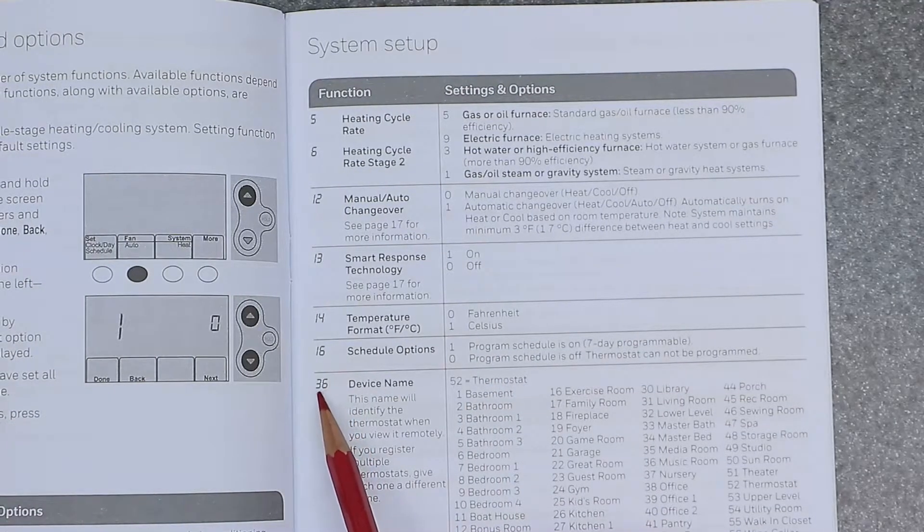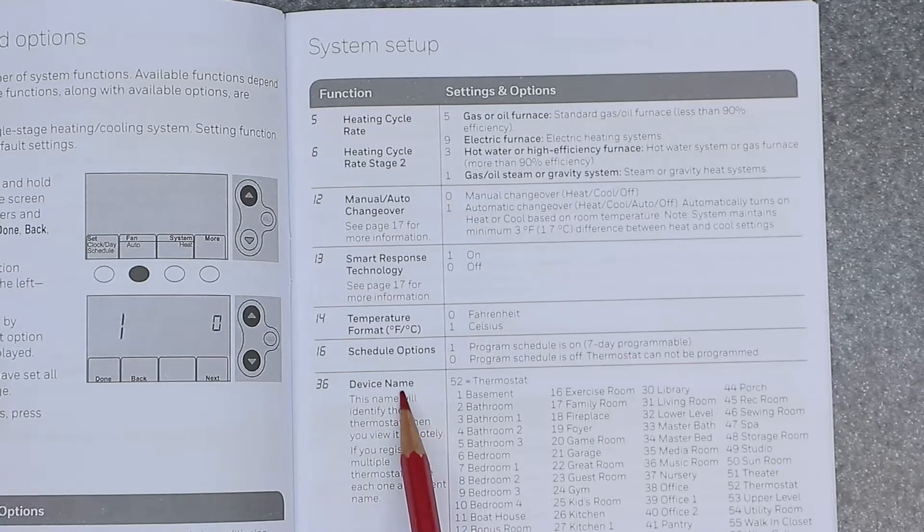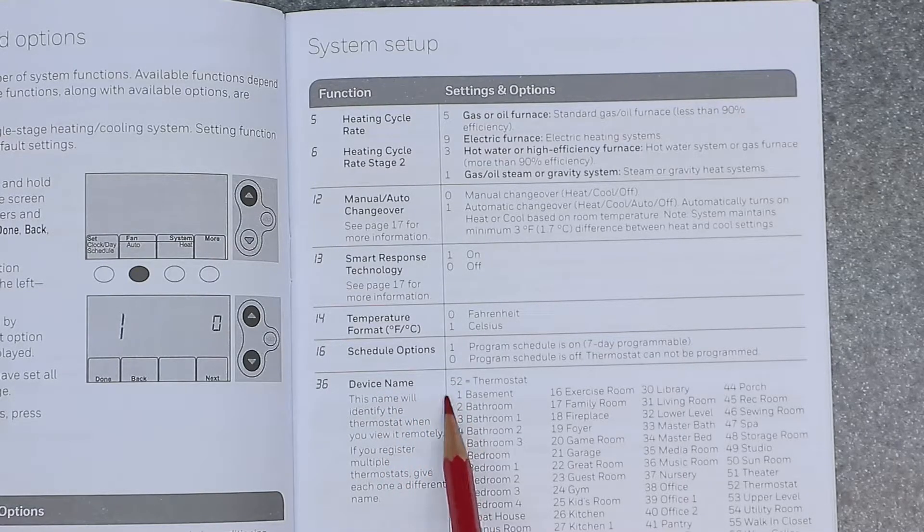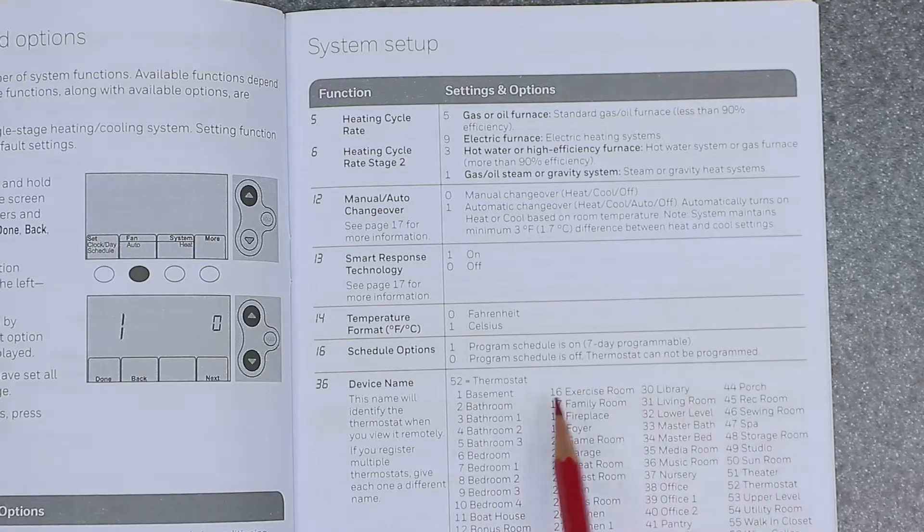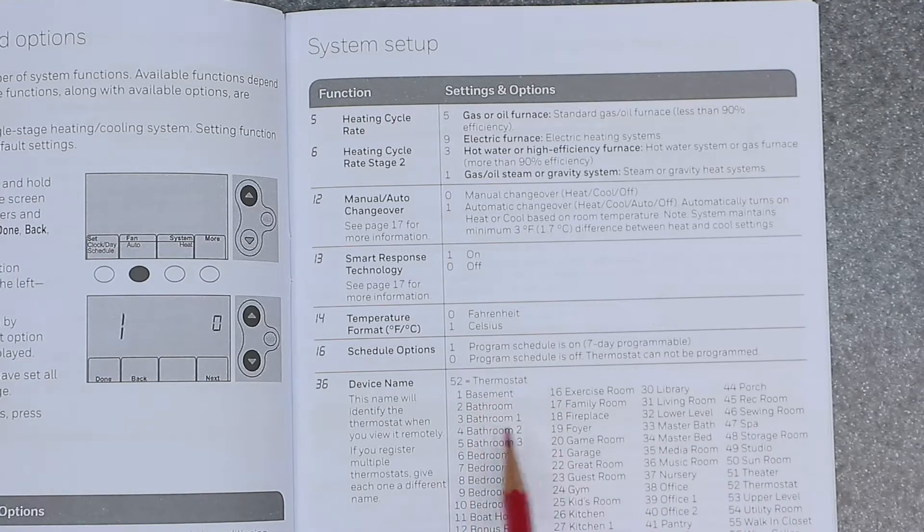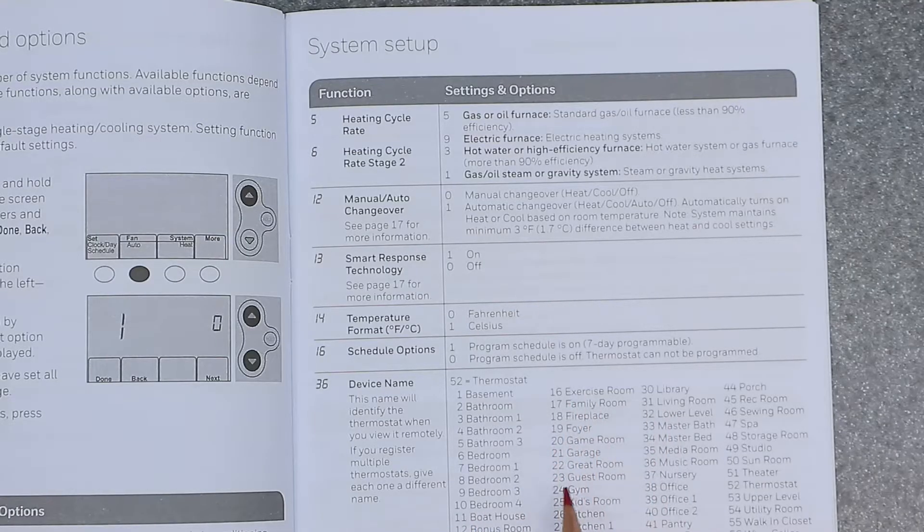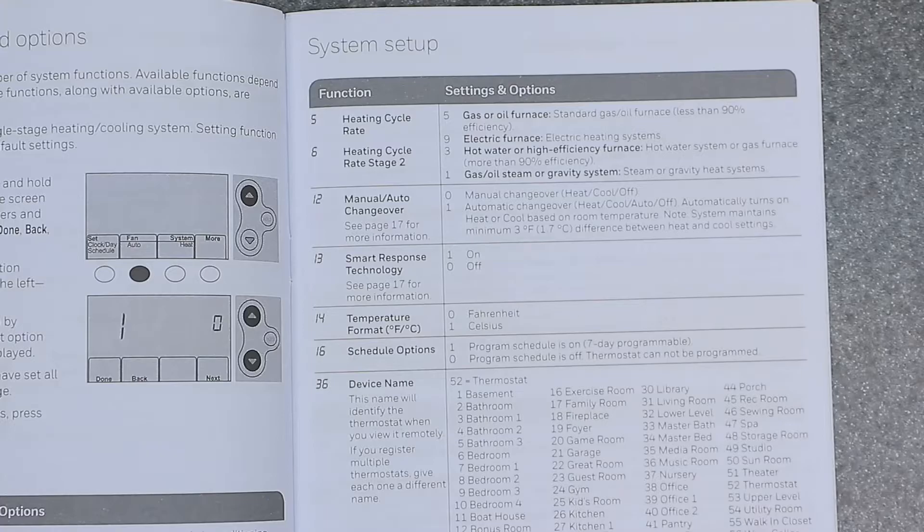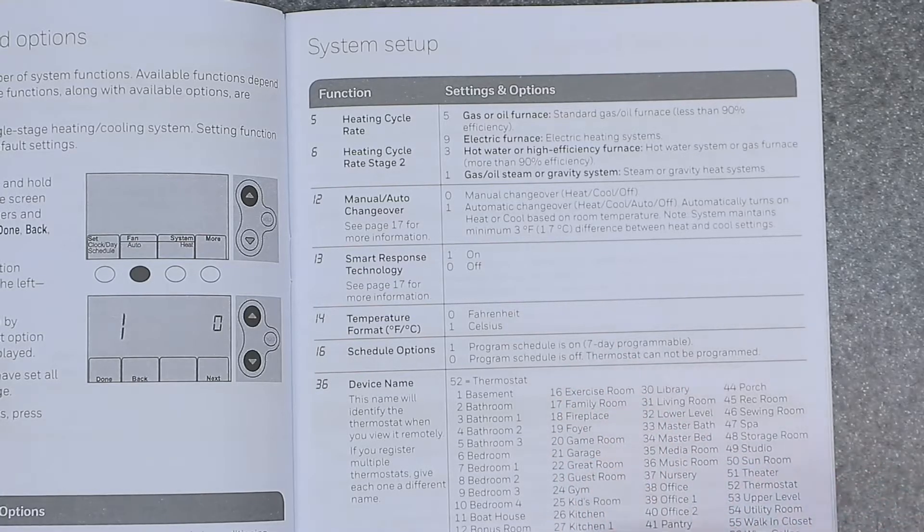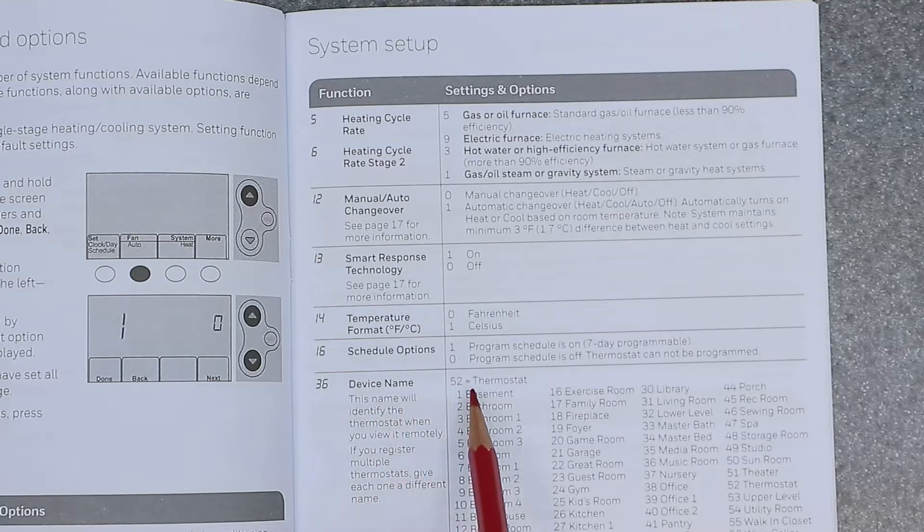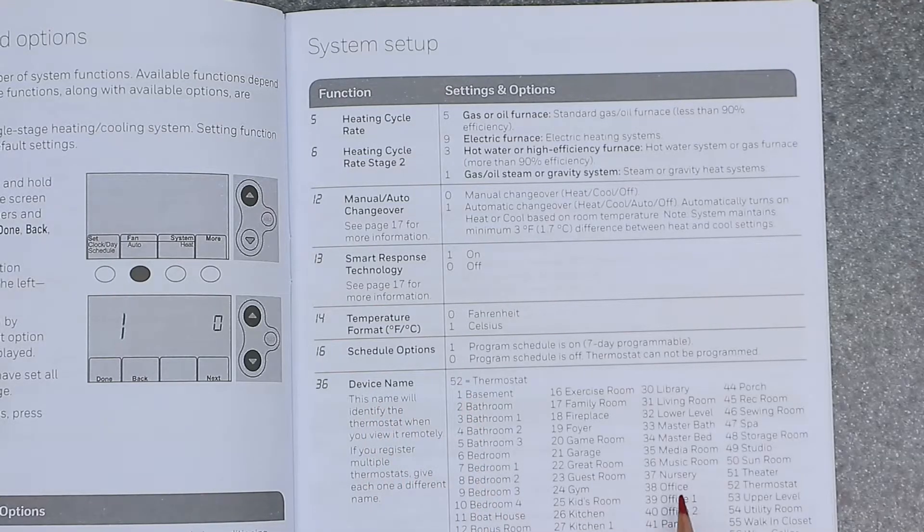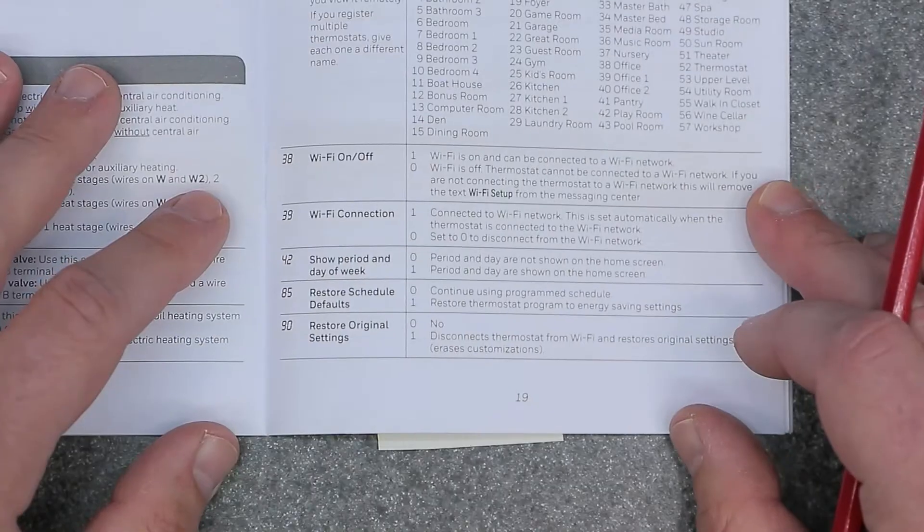Moving along, 36 is device name. And 52 equals thermostat. And then all these other numbers here are just, you can go on from basement, bathroom, bedroom, bonus room, exercise room, fireplace, gym, kitchen. You can name it accordingly. So take a look at this list. I will show a close up. But each room type has its own number.